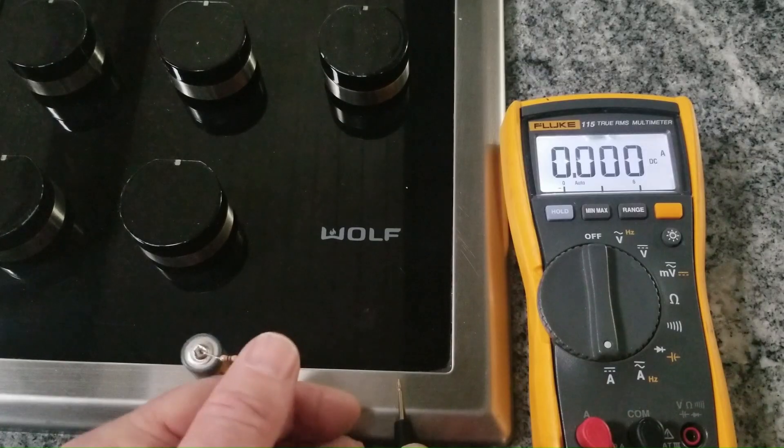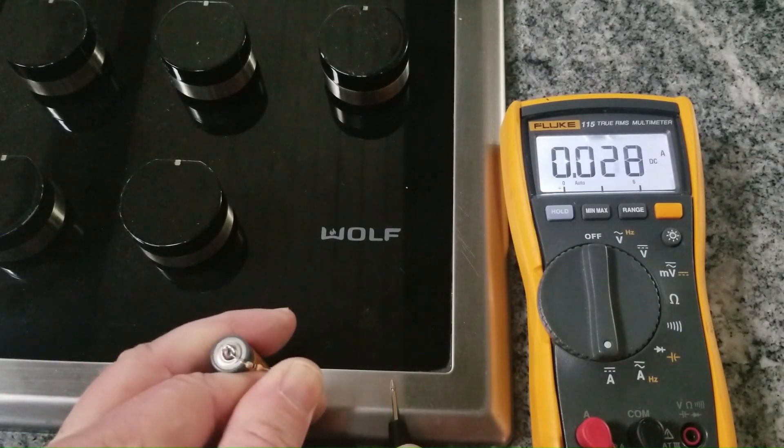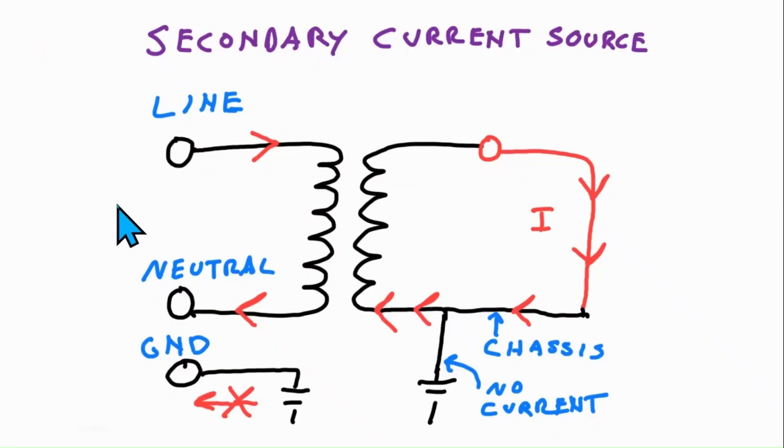I'll demonstrate actual current flow through the grounded chassis and explain the theory behind how that current is able to flow through it without causing a line to neutral imbalance that trips the GFCI.